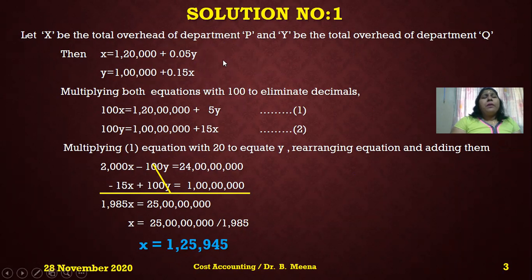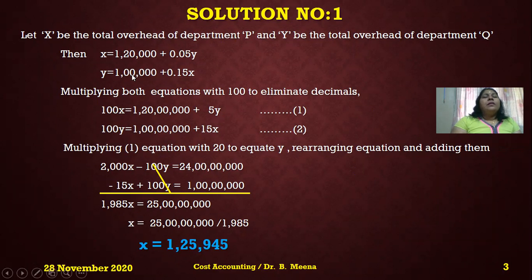After multiplying by 100, the first equation becomes: 100x = 1,20,00,000 + 5y. The second equation becomes: 100y = 1,00,00,000 + 15x. Now we rearrange both equations.